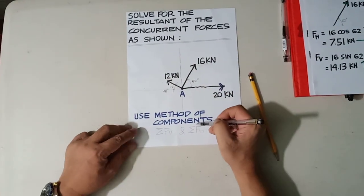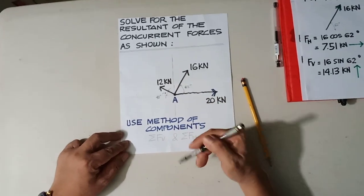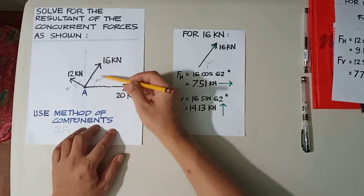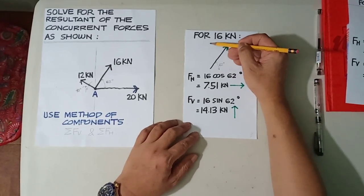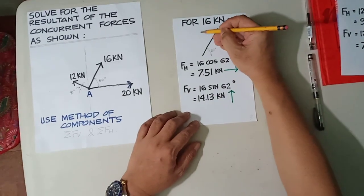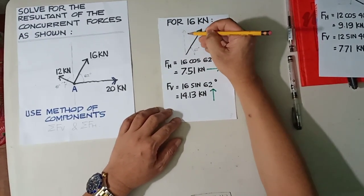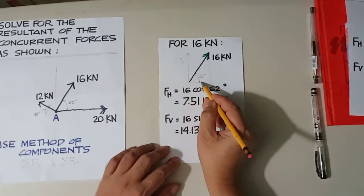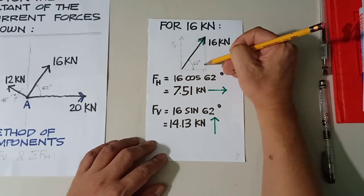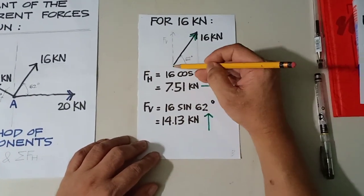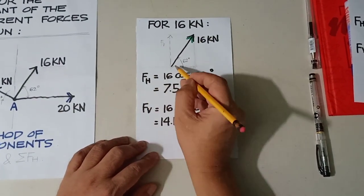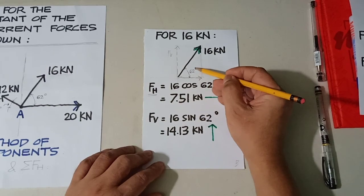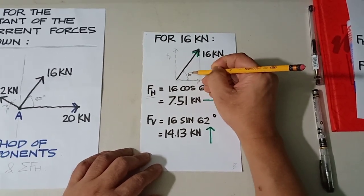We're going to use the method of components — we take vertical components and horizontal components. Let's solve for the 16 kilonewton force. If you draw a rectangle, you get a vertical component and a horizontal component. The horizontal component Fh is equivalent to 16 cosine of 62 degrees, since it is inclined at 62 degrees from the horizontal.